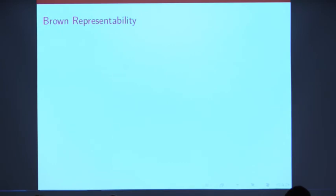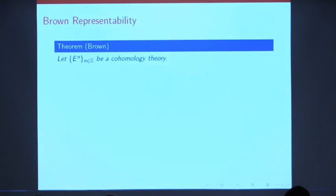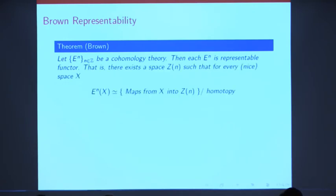So going back to cohomology theories in general, what can you say about them? Well, the first thing that you can say about cohomology theories is that they're representable. The Brown representability theorem tells you any time you have a cohomology theory, each of these functors E^N is a representable functor in the homotopy category of spaces. That means that there's some space, I'll call Z(N), such that E^N of X can be identified with homotopy classes of maps from X into Z(N).